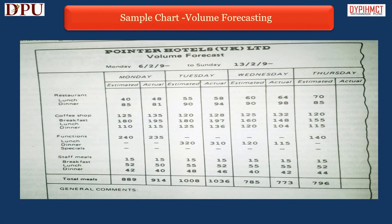Here you can see the forecasting chart of the Pointer Hotel, in which estimated forecasting and actual business against forecasting is shown outlet-wise.